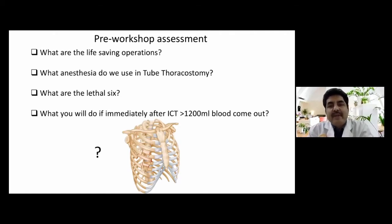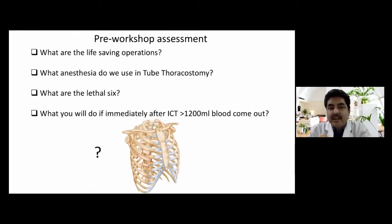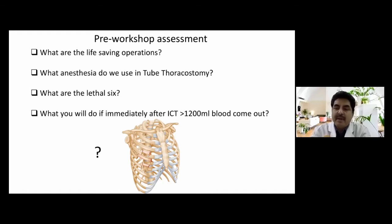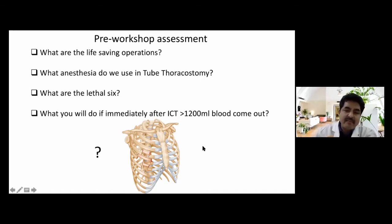Let's start with a brief pre-workshop assessment. Can you tell me: what are the life-saving operations — tube thoracostomy is one, what are the other two? Number two: what anesthesia do you use in tube thoracostomy? Number three: what are the lethal six? Number four: what will you do immediately after ICT — intercostal tube drainage — if more than 1200 ml of blood comes out? Number five: in my slide, you see a 3D image of a chest with fractures on either side of three ribs — what is it called and what is the diagnosis?